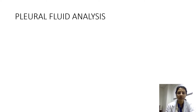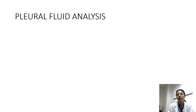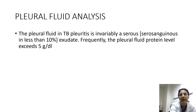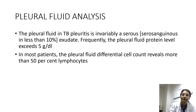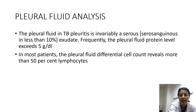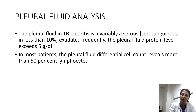What does pleural fluid analysis reveal? In tubercular pleural effusion, we see a straw-colored, serous, or serosanguinous exudate. Biochemistry shows pleural fluid protein exceeding 5 g/dL. The differential count shows more than 50% lymphocytes — usually as high as 80–90% — because CD4 helper T-cells are the predominant mediators of hypersensitivity in tubercular pleural effusion.